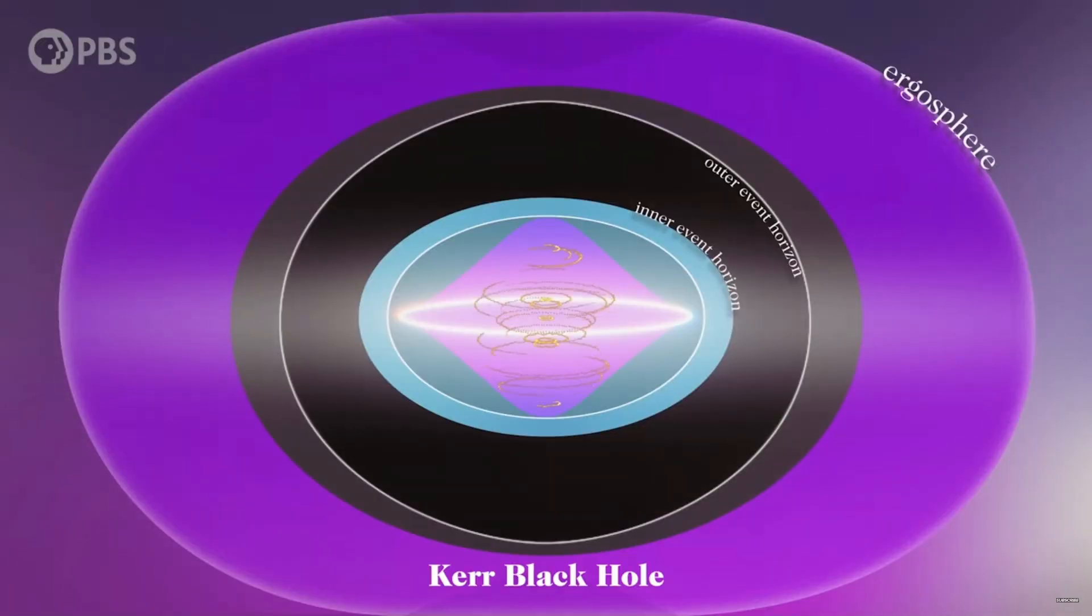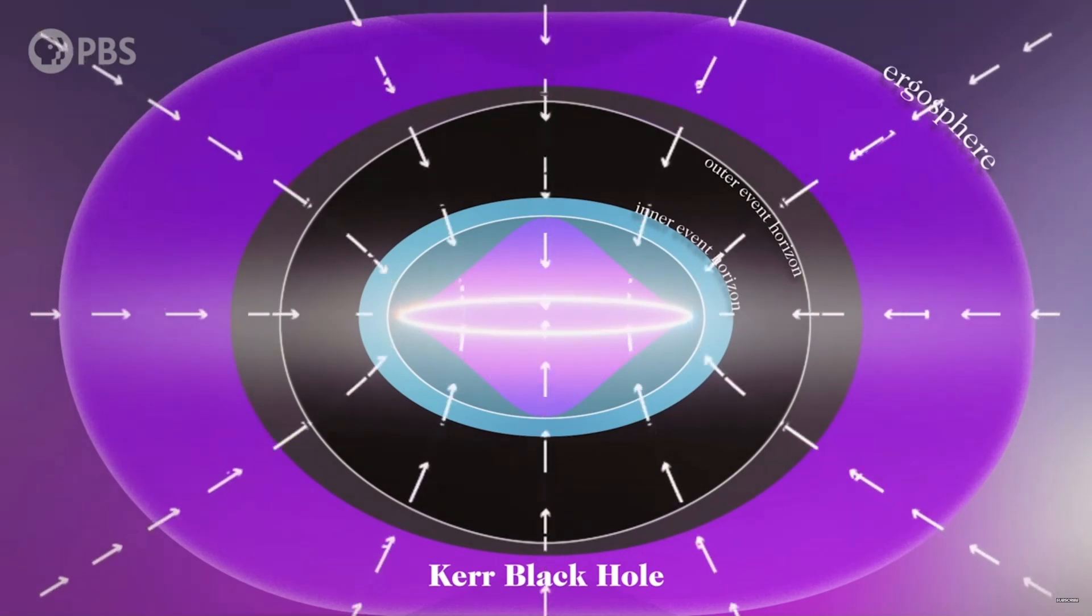The spinning black hole warps space so much that the singularity is essentially smeared out into a loop as the black hole rotates. This is known as a ring singularity. The size of the ring is dependent on how fast the black hole is spinning.